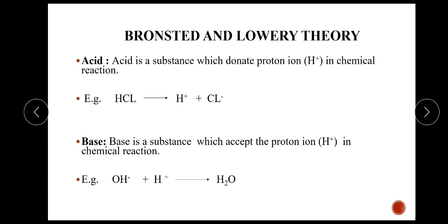The next theory is Bronsted and Lowry's theory. According to this theory, acid is a substance which donates a proton in a chemical reaction. Example is HCl, which gives H+ and Cl- ions. The next is the base: base is a substance which accepts a proton in a chemical reaction. Example is OH- plus H+, which gives the H2O molecule.